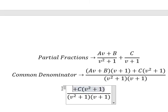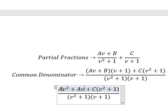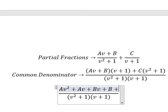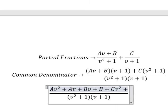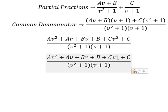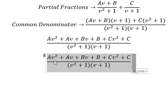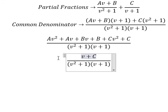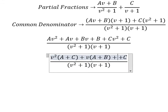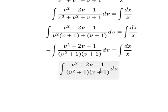We need to expand this one, and similar for this one. Now we can collect terms by grouping: for v squared we have A plus C, for v we have A plus B, and for the constant term we have B plus C.